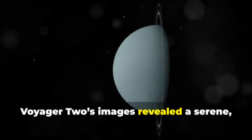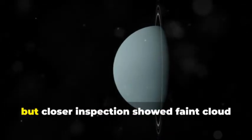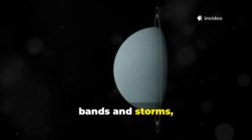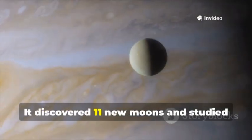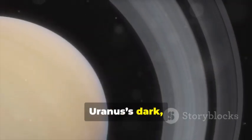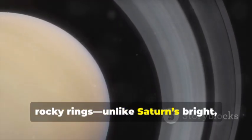Voyager 2's images revealed a serene blue-green ball, but closer inspection showed faint cloud bands and storms, with winds whipping at hundreds of kilometers per hour. It discovered 11 new moons and studied Uranus's dark rocky rings, unlike Saturn's bright, icy ones.